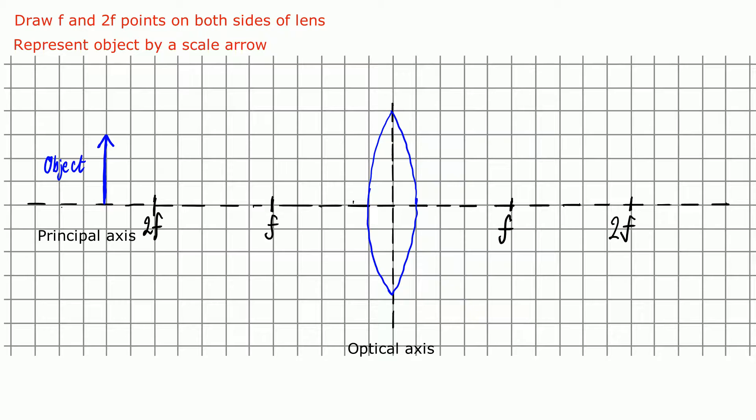Once you've done that, you need to draw two rays. The first one comes off the top of the arrowhead and passes through the center of the lens. Now, it turns out that when a ray passes through the exact center of the lens, it's not refracted at all. It just passes straight through without being bent.